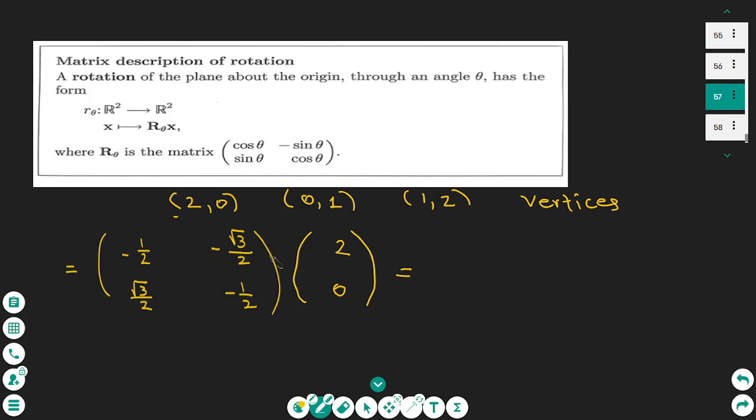We multiply matrices using a row times a column. We do the calculations: -1/2 times 2 plus -√3/2 times 0, and then we get the number -1. This is the first number.